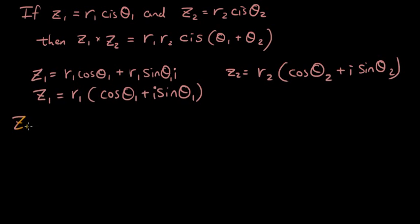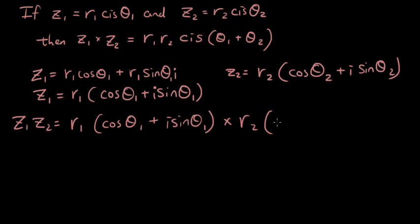Now we're going to multiply them together just using normal expansion. So z1 z2 is equal to, and now we're just going to multiply these two quantities together. So that gives us r1 cos θ1 plus i sin θ1 times r2 cos θ2 plus i sin θ2.